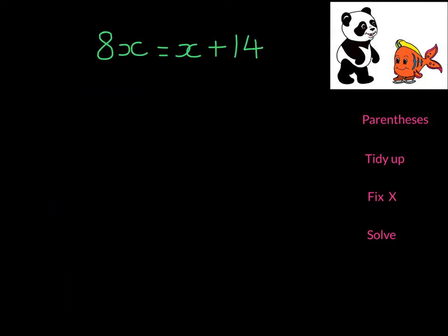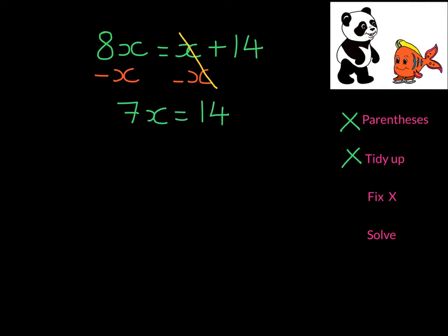In this next equation, we don't have parentheses and we don't have to tidy up. But we do have X's on both sides. To solve this, we're going to perform an inverse operation — the inverse of adding X is to subtract X on both sides. Remember, it's a system in balance. When I do this, the X's on one side will disappear, and on the other side, 8X minus 1X leaves 7X. On the right-hand side, I'm left with 14. Then we divide by 7, so X equals 2.